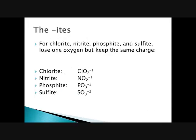Next, we have the ites. For anything ending in -ite — like chlorite, nitrite, phosphite, or sulfite — you take off one oxygen but keep the charge the same as the corresponding -ate. So chlorite is ClO₂ with a negative one charge; nitrite is NO₂ with a negative one charge; phosphite is PO₃ with a negative three charge; and sulfite is SO₃ with a negative two charge.